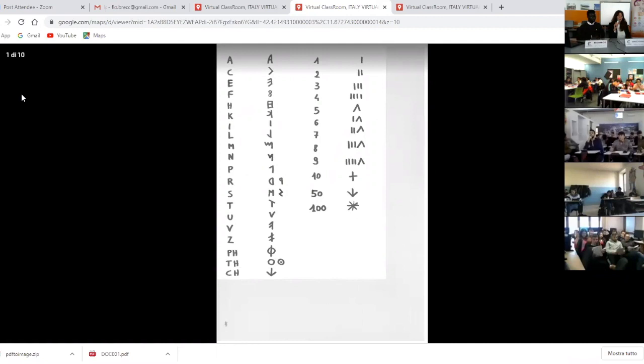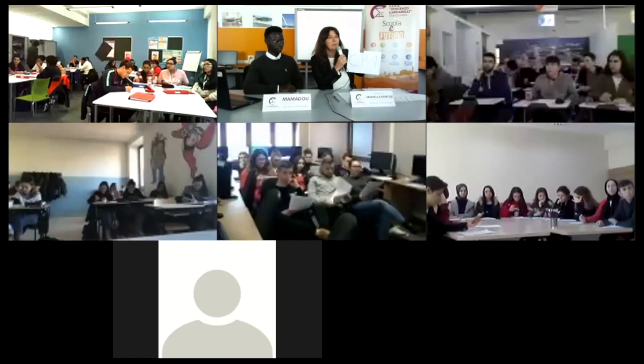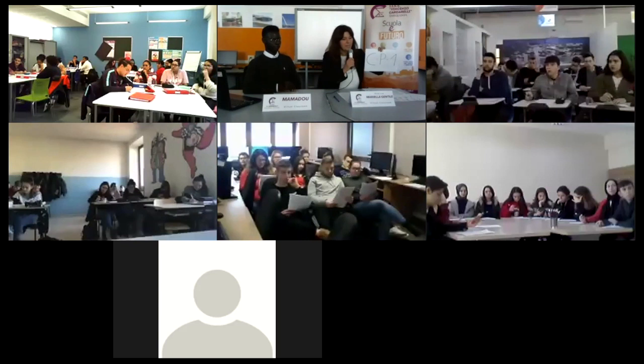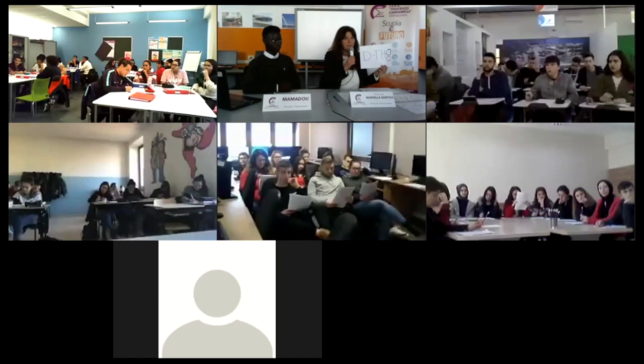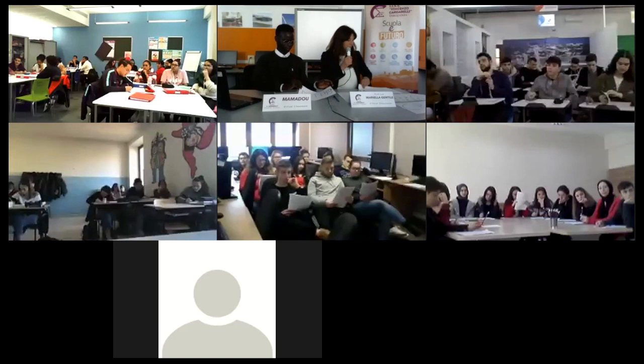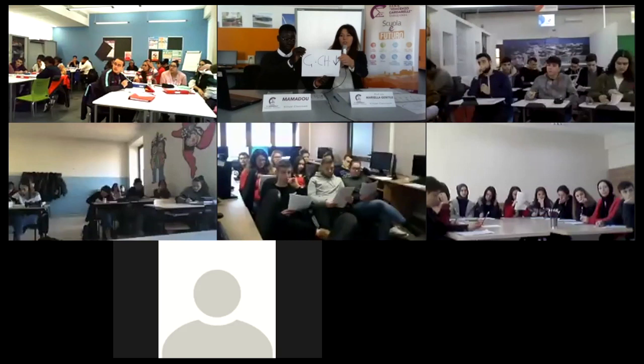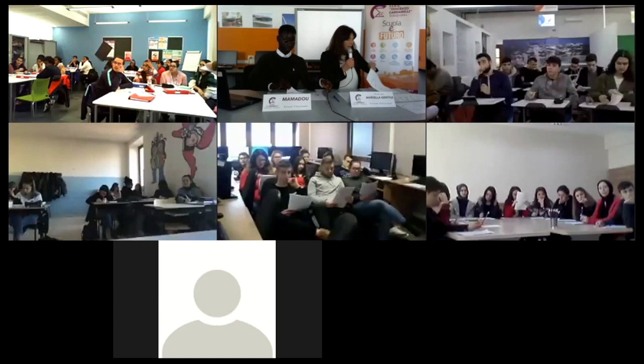Now I will show you the Etruscan alphabet. The Etruscans didn't have all the letters in the alphabet. For example, they didn't have the letter C — they used the letter P for the similar sound. For the letter D, they used T and H. They didn't use the letter G; they used C and H. They didn't use letter P; they used U instead.